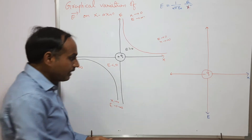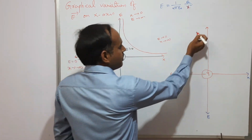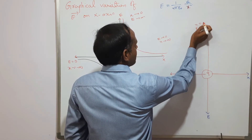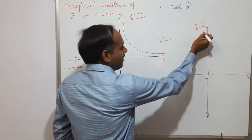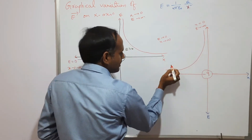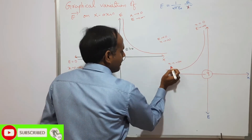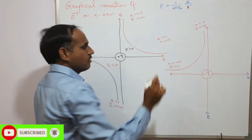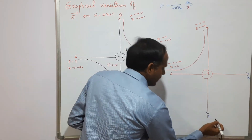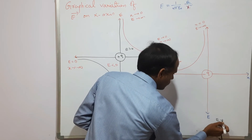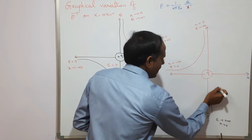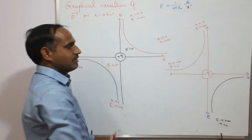For a negative charge: when x tends to 0, E tends to minus infinity. Then it starts to decrease in magnitude and becomes parallel to the x-axis as x tends to minus infinity, where E tends to 0. On the other side, E tends to plus infinity as x tends to 0, and then decreases down toward the x-axis.